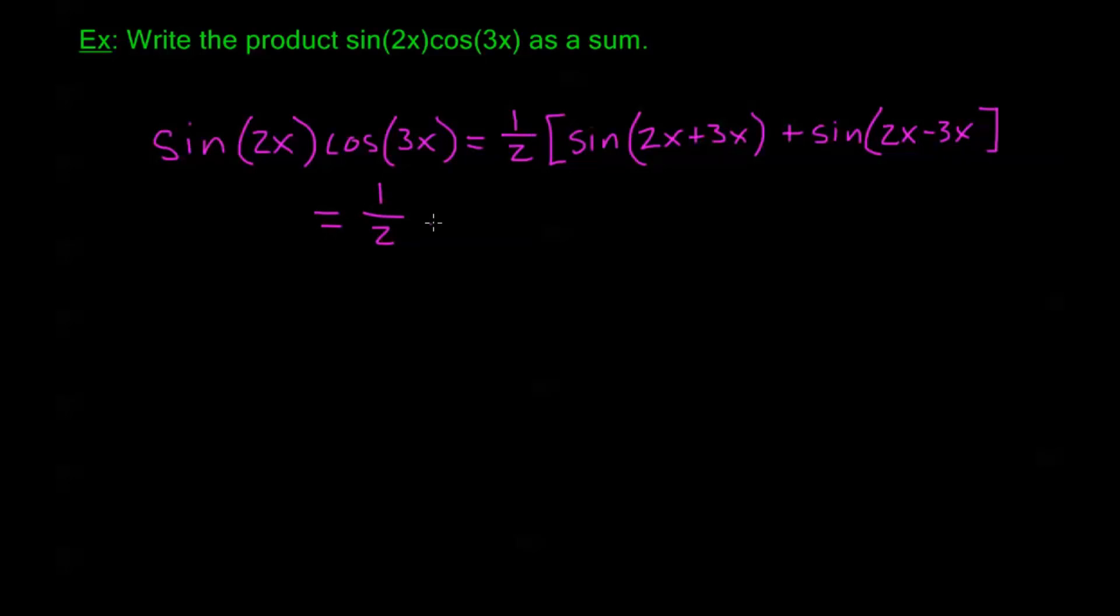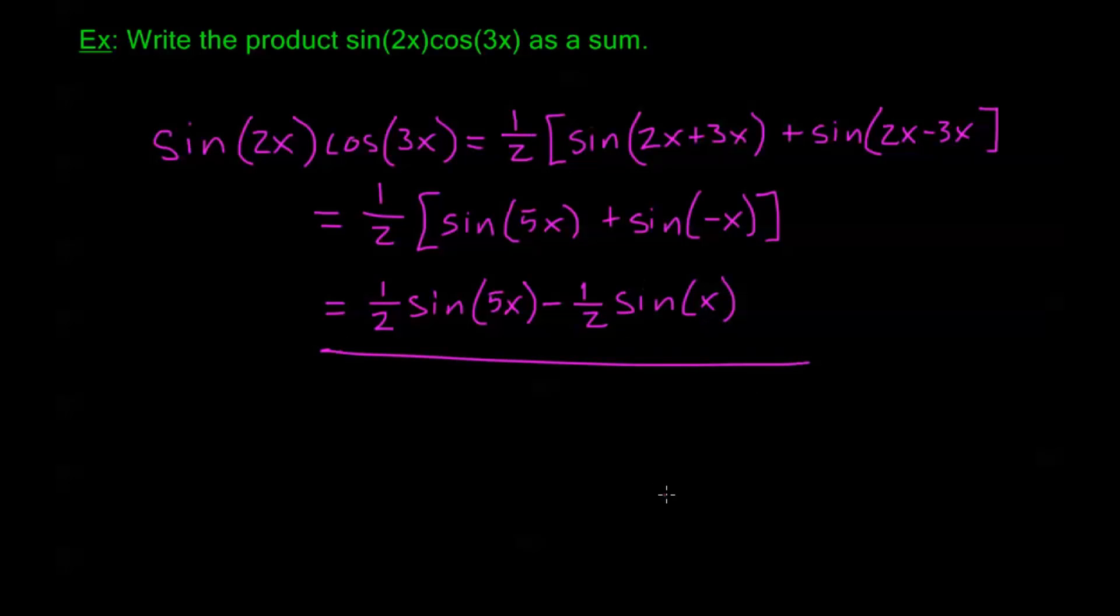Let's go ahead and simplify a little bit. This is one-half sine of 5x plus sine of negative x. Now we've already written the product as a sum. As far as what the question is asking us to do, we're done. But we do want to make it pretty apparent that we know what we're doing. We want to make it look like a sum instead of having this one-half out here. So let's go ahead and write this as one-half sine of 5x. And we don't really like those negatives in there either. So let's go ahead and pull that out with the odd property of sine is minus one-half sine of positive x. So here we go. We've taken the product sine 2x cosine 3x, and now we've written as a sum.